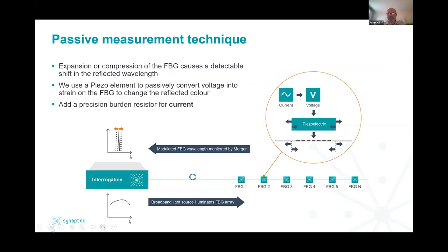On that optical fiber, where we've introduced this small mirror, we can place a piezoelectric stack. Piezoelectrics respond directly, very accurately and proportionately when you apply a voltage field to them. We apply any voltage, that causes the piezo to react and pull or push the mirror, which changes the color of light reflected back. These microscopic — picometer — changes in the color of light reflected back by these gratings tell you about that voltage. Adding a precision burden resistor lets us go from any current to a voltage to strain in the fiber and a color of light back to the center.